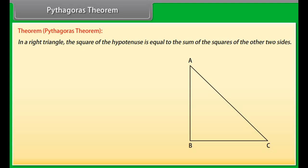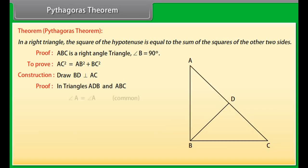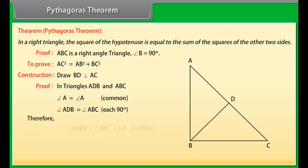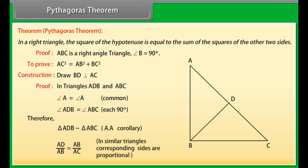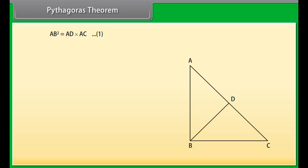Proof: ABC is a right-angled triangle with angle B equal to 90 degrees. To prove: AC² equals AB² plus BC². Construction: Draw BD perpendicular to AC. In triangles ADB and ABC: angle A equals angle A (common), and angle ADB equals angle ABC (each 90°). By AA corollary, triangle ADB is similar to triangle ABC, which implies AD upon AB equals AB upon AC, or AB² equals AD times AC. Mark this as equation 1.